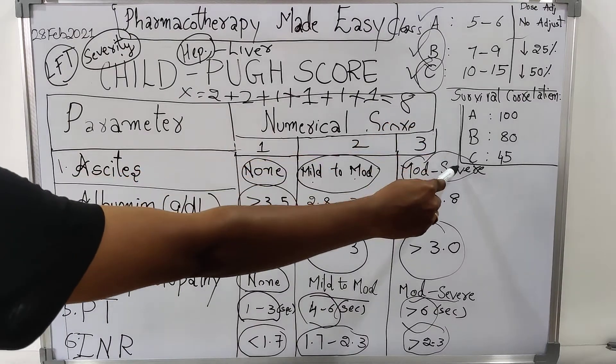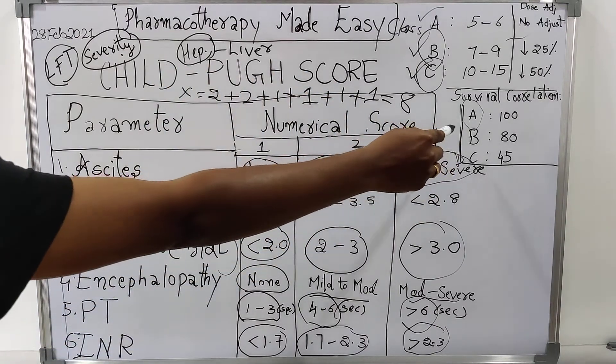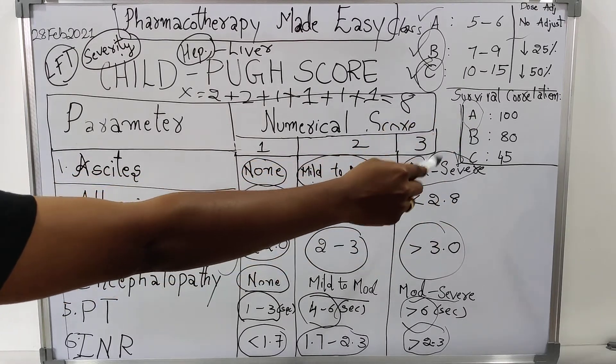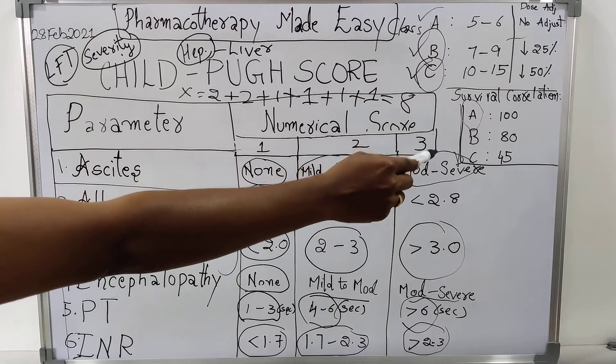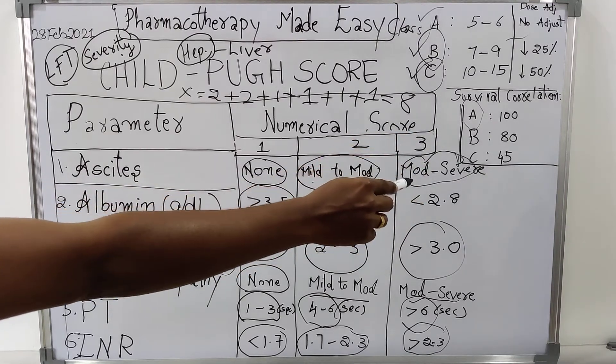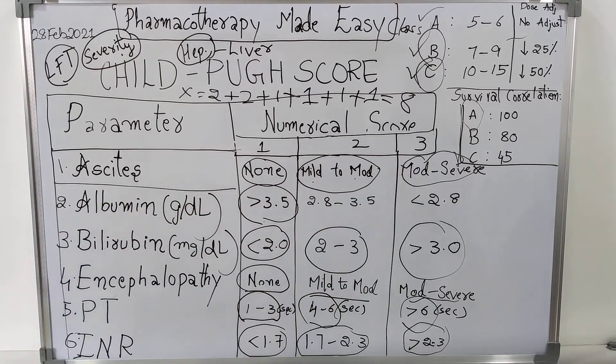And this is the survival correlation. If a patient comes under class A, survival rate is 100% for 1 year. If patient comes under score B, survival rate for the patient for 1 year is 80%. Whereas those patients coming under class C, the survival rate will be 45%. Thank you for listening. Please do subscribe to our channel.